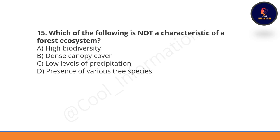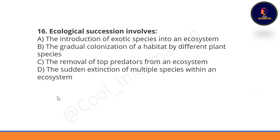Which of the following is not a characteristic of a forest ecosystem? Low levels of precipitation is not a characteristic of forest ecosystems. All other options are characteristics of forest ecosystems, so option C will be correct here.